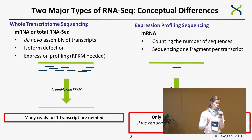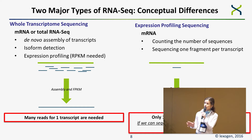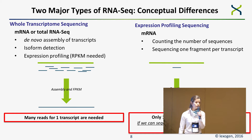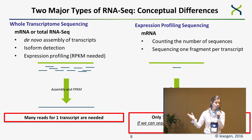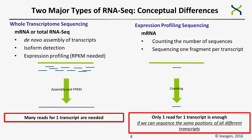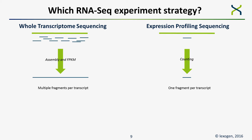There are two major types of RNAseq with conceptual differences. For whole transcriptome sequencing, we work with mRNA or total RNA and do normal assembly of transcripts where we detect isoforms and perform expression profiling, generating multiple fragments per transcript — many reads per transcript. For expression profiling, sequencing just one fragment per transcript is enough, and in the ideal case even one read per transcript would suffice if we could sequence the same positions of all different transcripts.